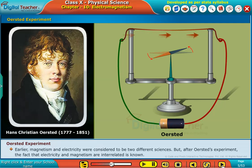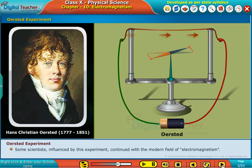Earlier, magnetism and electricity were considered to be two different sciences. But after Oersted's experiment, the fact that electricity and magnetism are interrelated became known. Some scientists influenced by this experiment continued with the modern field of electromagnetism.